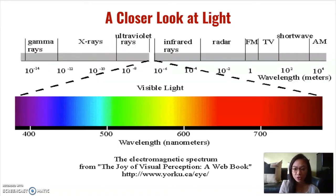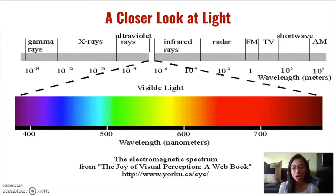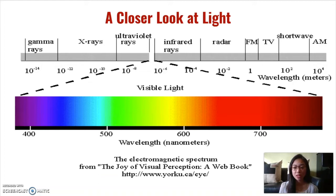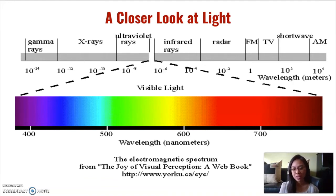We consider light as the portion of the electromagnetic spectrum that is visible to our eyes. This visible light manifests in the colors red, orange, yellow, green, blue, indigo, and violet — or ROYGBIV. Remember that there are more forms of light than we can see, such as gamma rays, UV rays, radio waves, or infrared waves. These are waves that are part of the spectrum but we cannot see them. Today we're focusing on visible light.